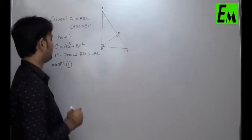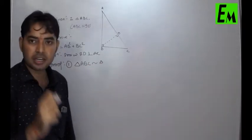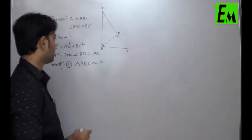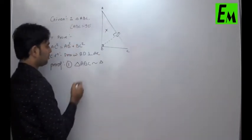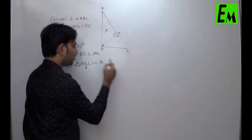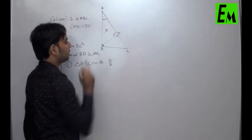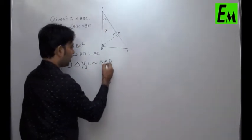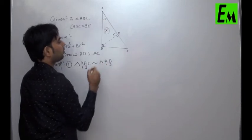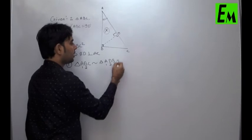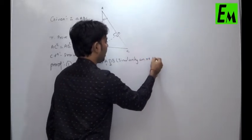In proof, first point: triangle ABC is similar to triangle ADB. While writing similarity, we have to see correspondence. Here, angle B is 90°. In the smaller triangle ADB, angle D is 90°, so B corresponds to D — D is on second position. Angle A is a common angle in triangle BAD and triangle BAC, so A corresponds to A in first position. Therefore, C corresponds to B. This is by the similarity theorem on right-angled triangles.